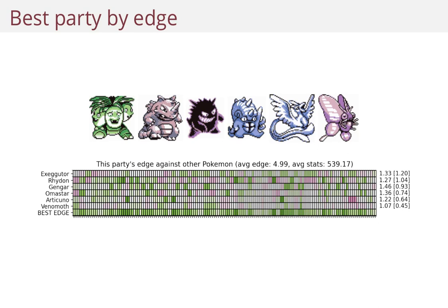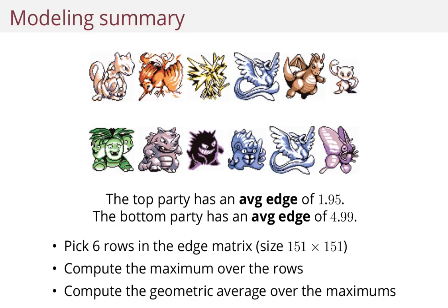When they attack you, their attacks are not effective. So this is a huge advantage when you meet other Pokemon. To summarize, if we just looked at total stats, the top party has an average edge of 1.95. But the bottom party has an average edge of 4.99, which is way higher.